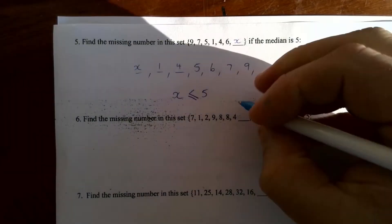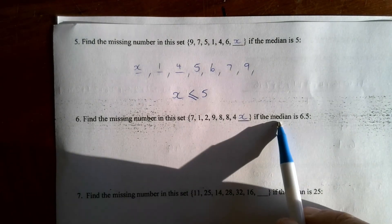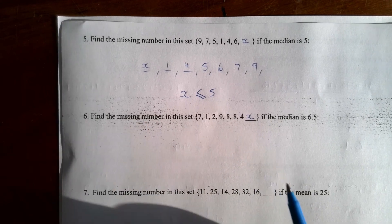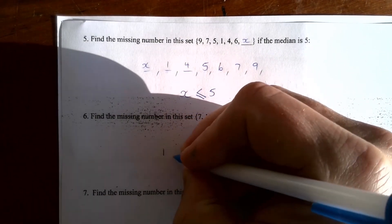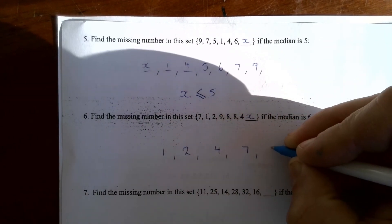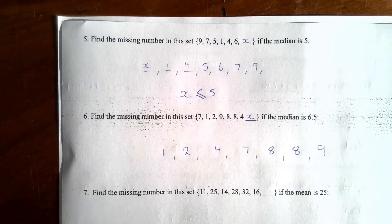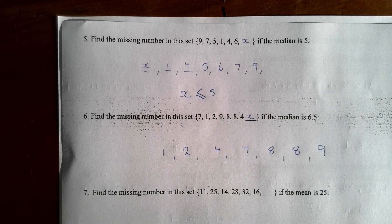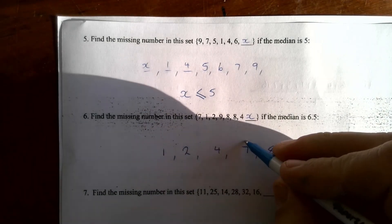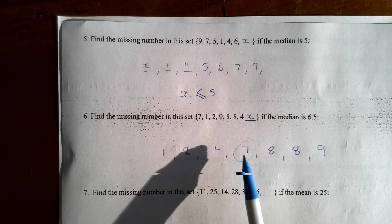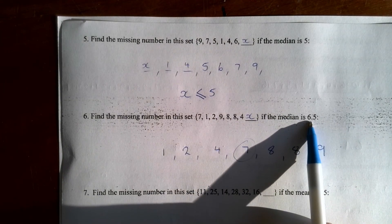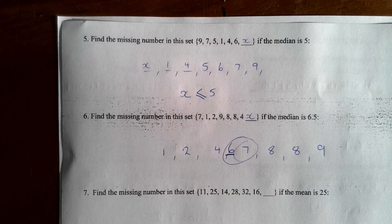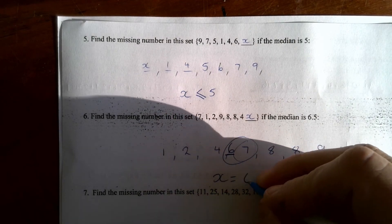Question 6 asks for another unknown number to produce a median of 6.5. Writing the known values in ascending order gives: 1, 2, 4, 7, 8, 8, 9. With 8 scores altogether we look for the fourth and fifth scores as the median. Currently the fourth score is 7, so x must squeeze in before it. Since halfway between 6 and 7 is 6.5, the unknown x is 6.